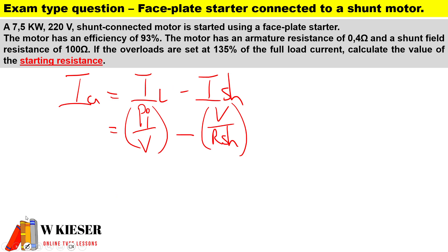As you can see, we need the input power. To calculate the input power, it's the output power divided by the efficiency of 0.93. The output power is 7500W divided by 0.93, so the input power is 8064.516W.